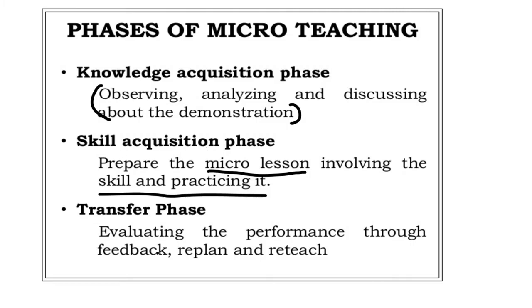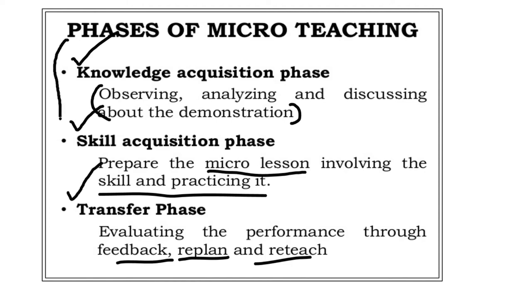Transfer Phase involves evaluating the performance. Performance is evaluated through feedback, re-plan, and re-teach. This is the Transfer Phase — the teacher trainee will attain confidence in teaching. The three phases of micro teaching are: Knowledge Acquisition Phase, Skill Acquisition Phase, and Transfer Phase.